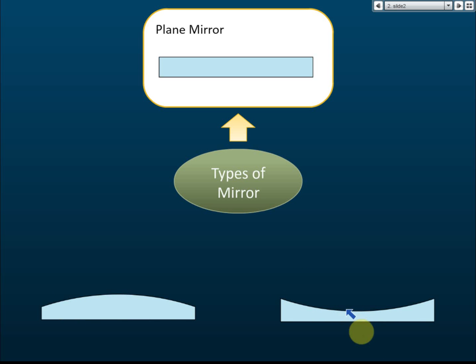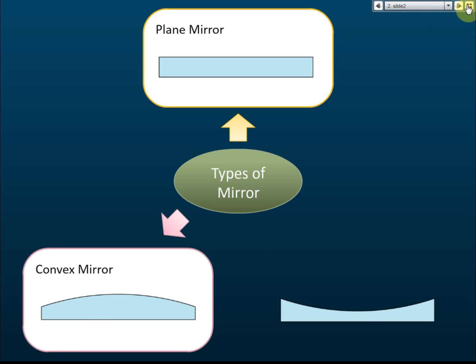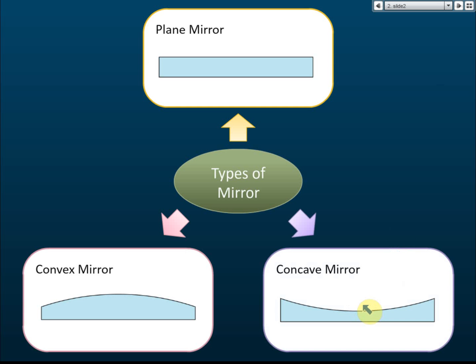For the curved mirrors, this one is called the concave mirror, and this one is the convex mirror. Sometimes students have problems remembering the names of these two mirrors — convex and concave — so how do we know which one is concave and which one is convex?